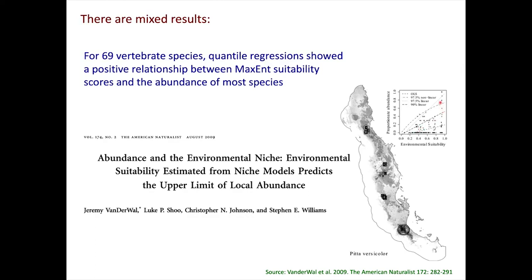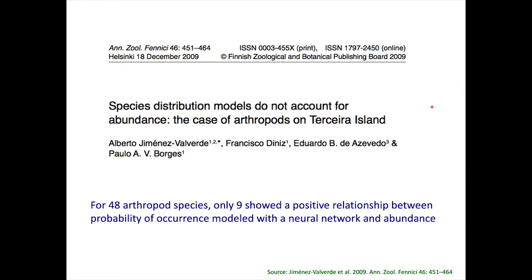One interesting result is the triangular relationship between suitability and abundance—at high suitabilities he found either low or high abundances. His results show that only the upper quartile of the regression analysis had a significant relationship with abundance. There was some criticism of this analysis, and Alberto Jimenez-Valverde replicated it with a neural network algorithm for 48 arthropod species and could not find a relationship between the modeling algorithm output and species abundance.